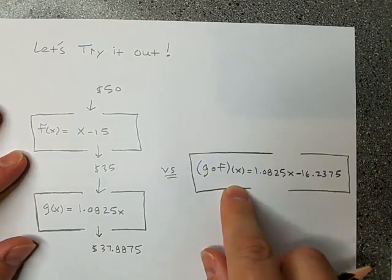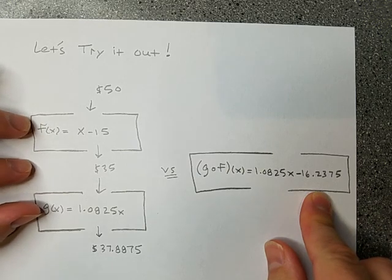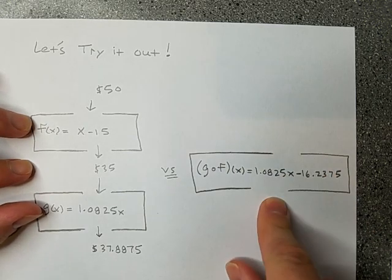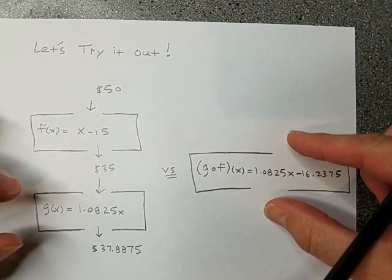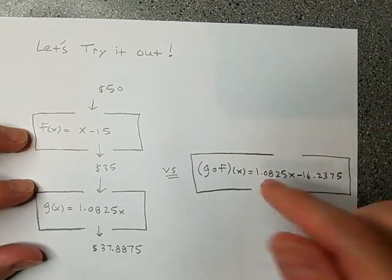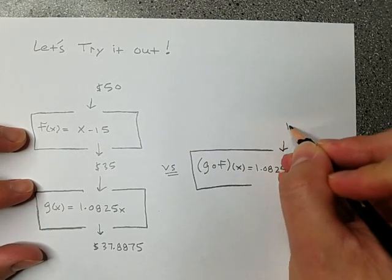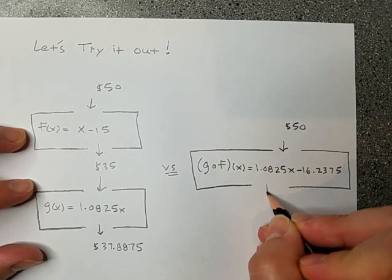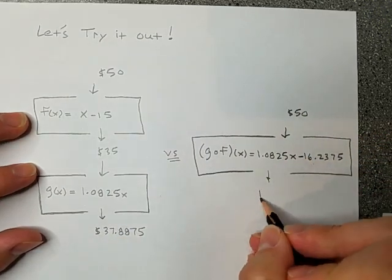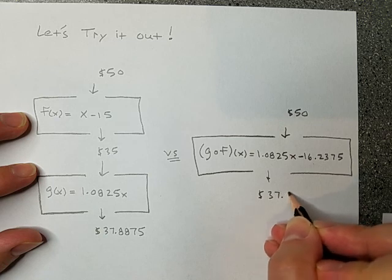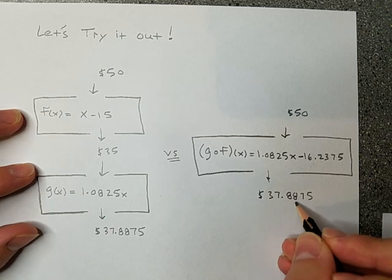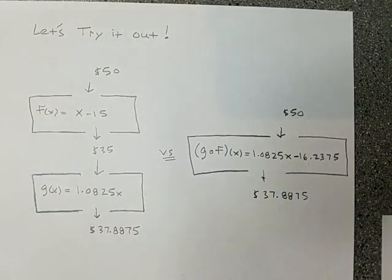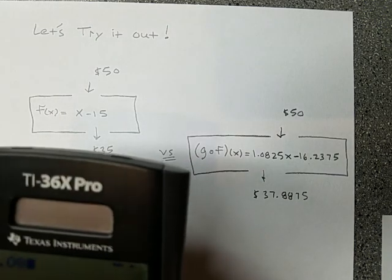Now, if this is right, if this is one function that goes through this entire process in one step, one box, one step, one function, it applies the discount, then adds the tax. If this works, then when I put in 50, it had better give me this number. $37.8875, which we'd round out $37.89. Okay. But let's see. Seeing is believing. I'm a big believer in that. So I want you to see it.